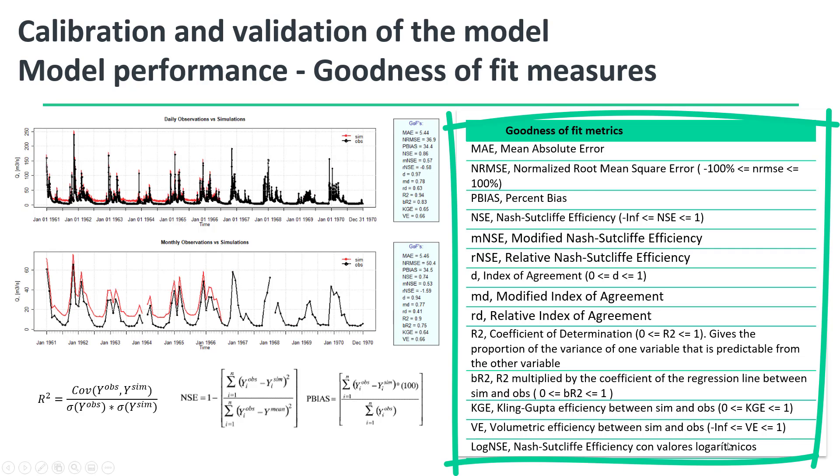This table shows several goodness of fit metrics that can be used to assess the performance of the model. Each one has its own advantages and limitations. Some of these metrics evaluate the model performance to represent peak flows and some others to represent low flows. This depends on the modeling interest.